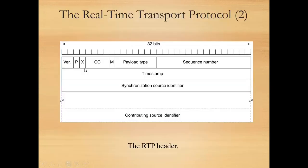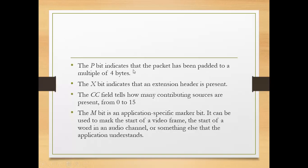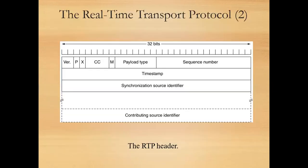The next field is P. The P bit indicates that the packet has been padded to a multiple of four bytes. So P is showing padding.